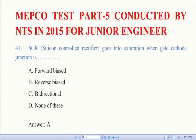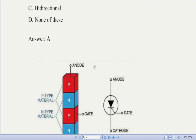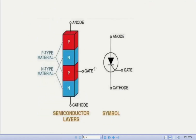I have already discussed four parts of the same test. Now we come to question number 41: SCR goes into saturation when gate-cathode — there are four options. The correct answer is A, forward bias. SCR stands for Silicon Controlled Rectifier. It has three terminals: anode, cathode, and gate. It is a unidirectional device, that is, it only conducts in forward bias. It is a controlled device.